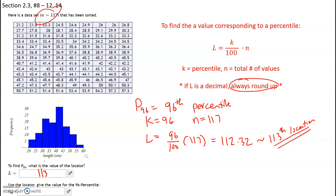So L, your locator index when rounded up, is going to be 113. Now let's find the 113th location. I'm going to count backwards since 113 is very close to the end: 117, 116, 115, 114, and right there — this is the 113th location, which is 53.4.